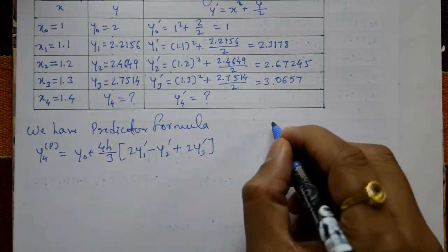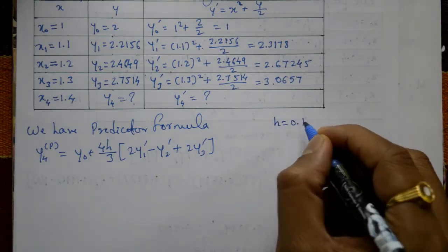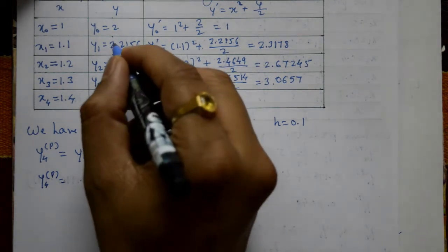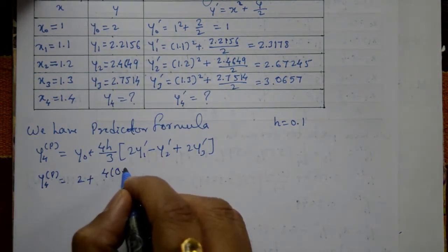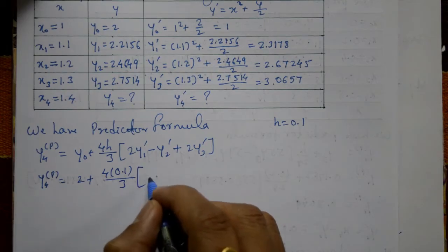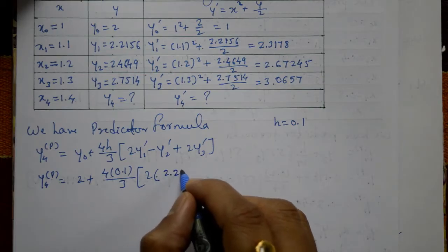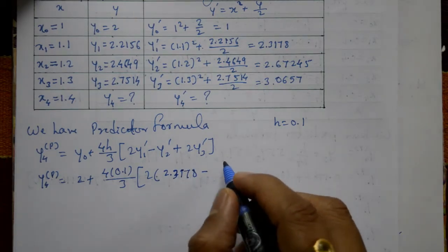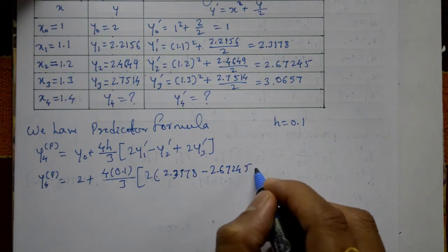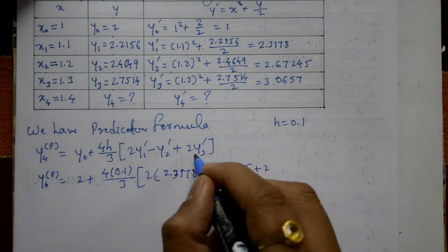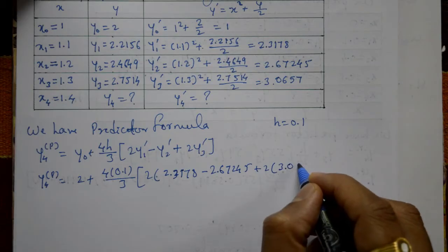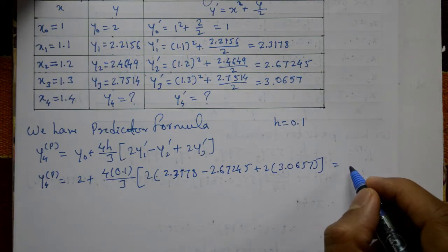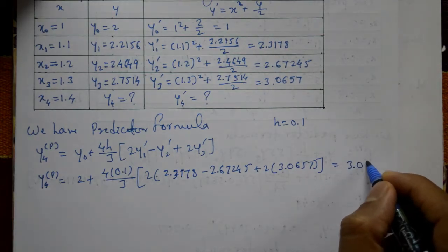Substituting into the predictor formula: y4(p) = 2 + (4 × 0.1/3) × (2 × 2.3178 − 2.67245 + 2 × 3.0657). Using a calculator, this gives y4(p) = 3.0793.